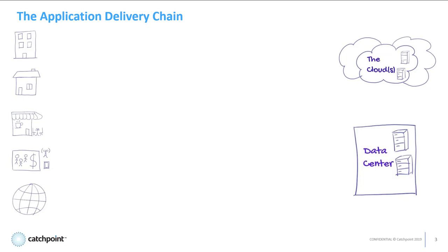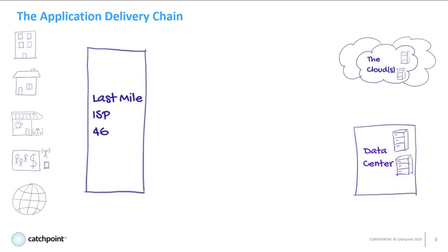So when you're setting up your monitoring, you must keep that in mind. Those global users are coming into your systems through the internet. Unpacking the internet reveals there are many components to it. The first thing they touch is the last mile — these are the ISPs of the world — and everyone must touch one of these many providers to get onto the internet. Each provider has varying levels of reliability and performance.